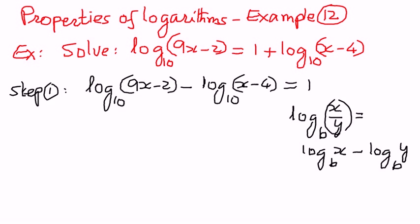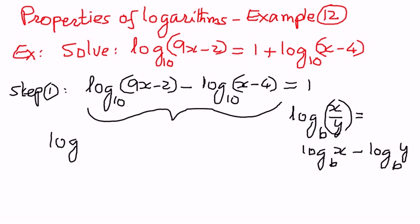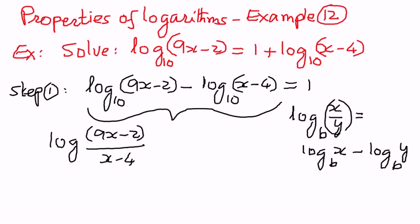Therefore, we can express this as a single logarithm. We can write it as: log of (9x minus 2) divided by (x minus 4), all to the base 10, is equal to 1.